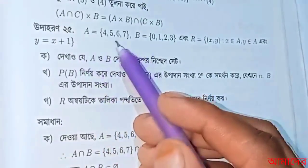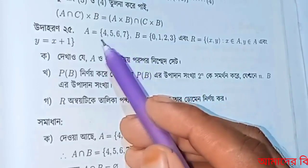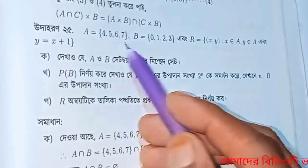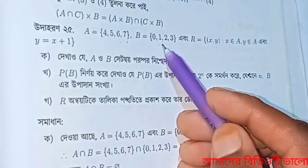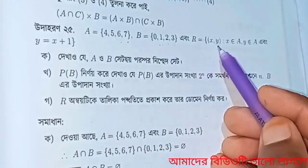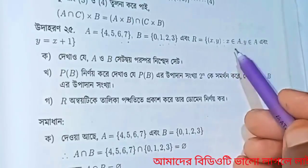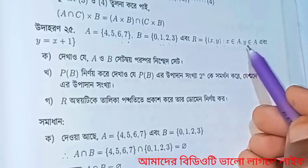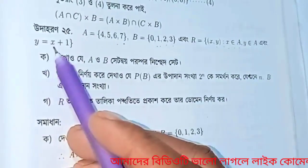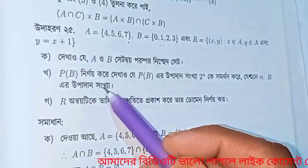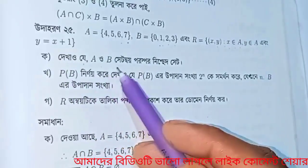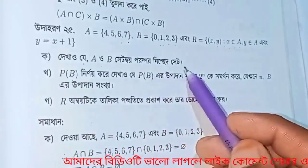A equals 4, 5, 6, 7. B equals 0, 1, 2, 3. And R equal {(x, y) : x belongs to A, y belongs to A, and y equal x plus 1}. A O B set dui porspor nicchet chet.